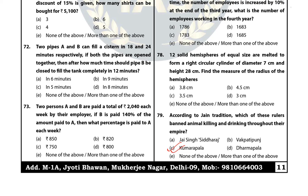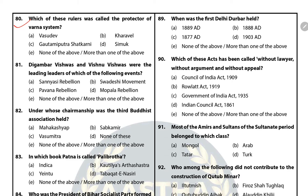Question 80: Which of these rulers was called the protector of the Varna system? The answer is C — Gautamiputra Satakarni. He was the greatest ruler of the Satavahana dynasty. He re-established the Chatur Varna system, prevented the Varnasankar system, and donated a village called Karajak to the Buddhist Sangha.